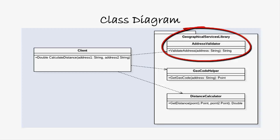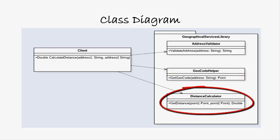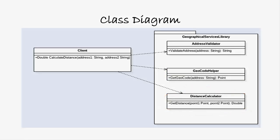AddressValidator returns a USPS validated address as a string assuming the address is valid; if the address is invalid, it returns an empty string. The GeocodeHelper class accepts an address as a string object and returns a Point object that contains the x and y coordinates, or the latitude and longitude, associated with that address.